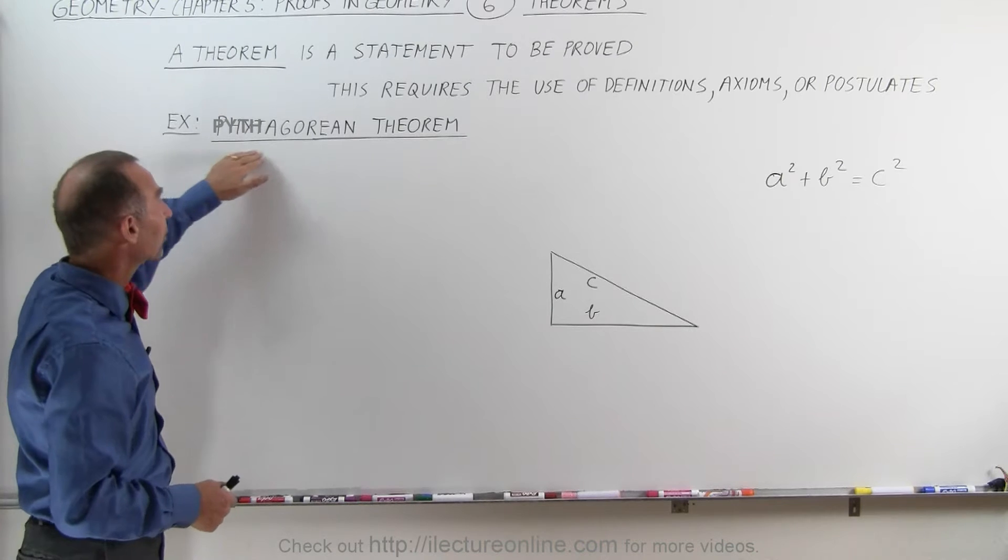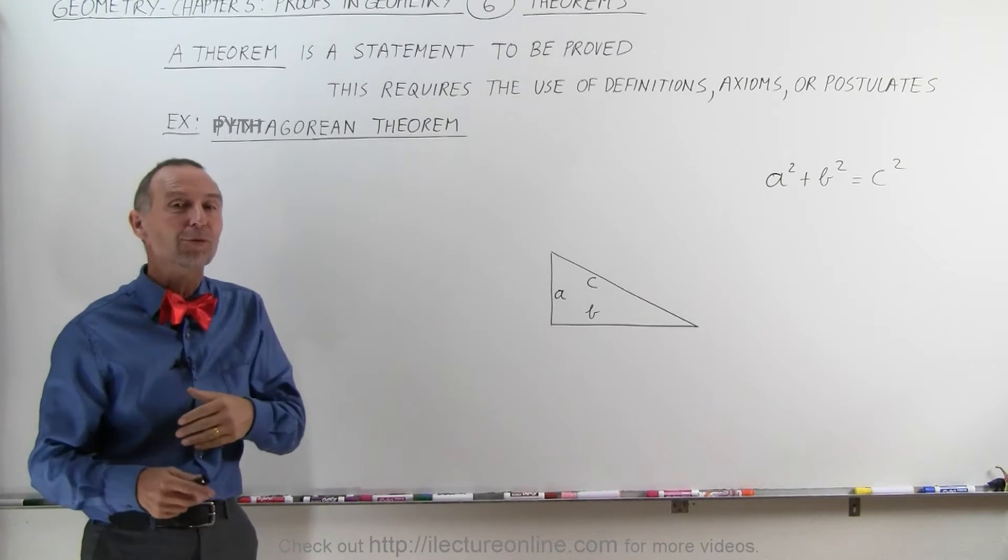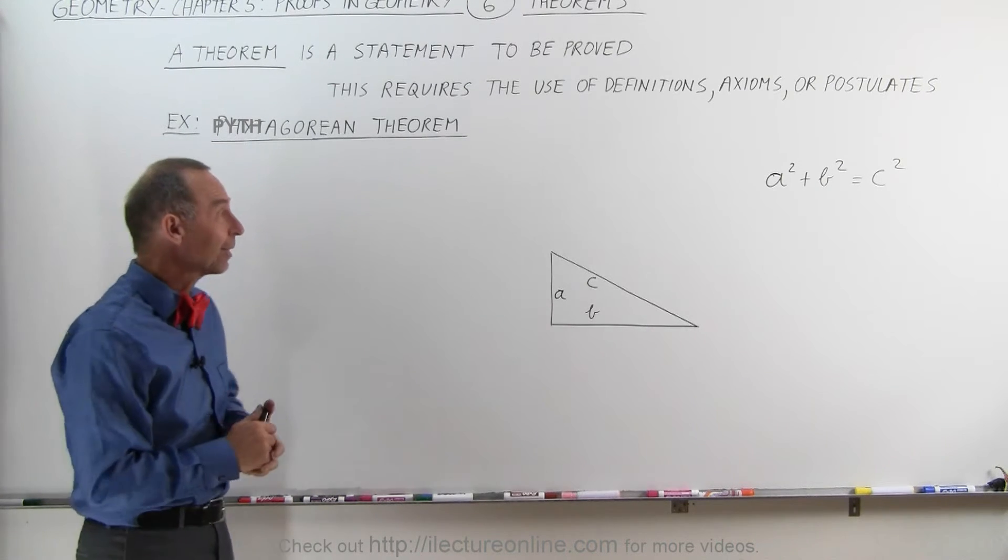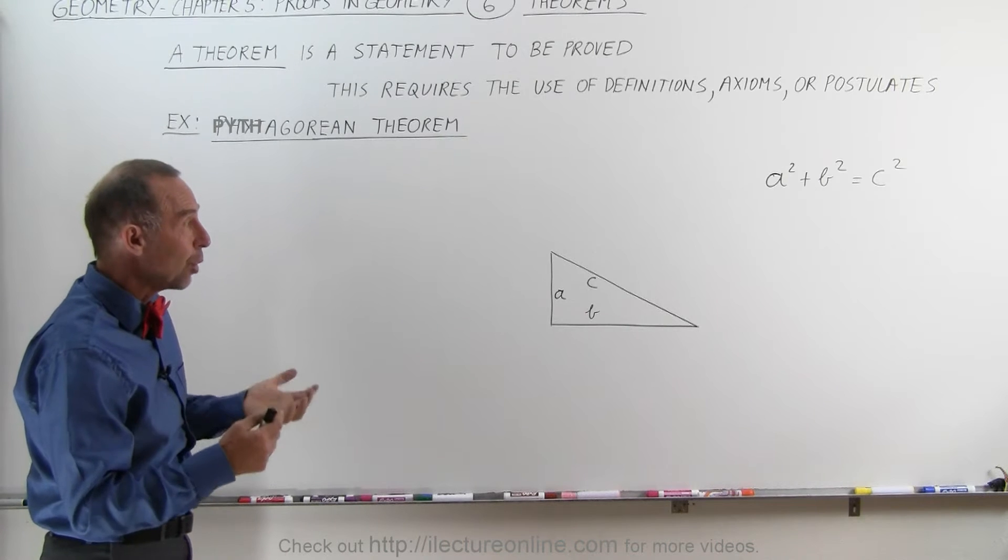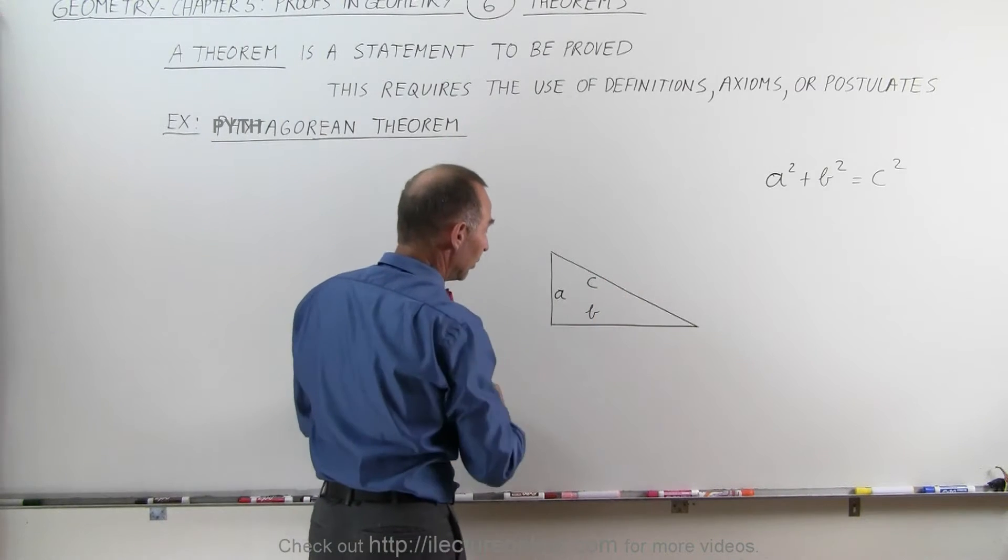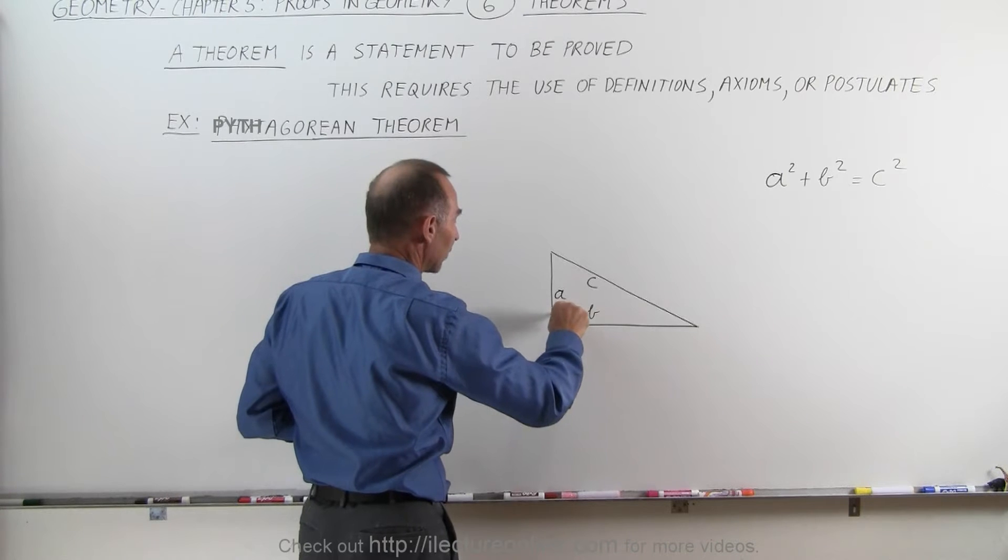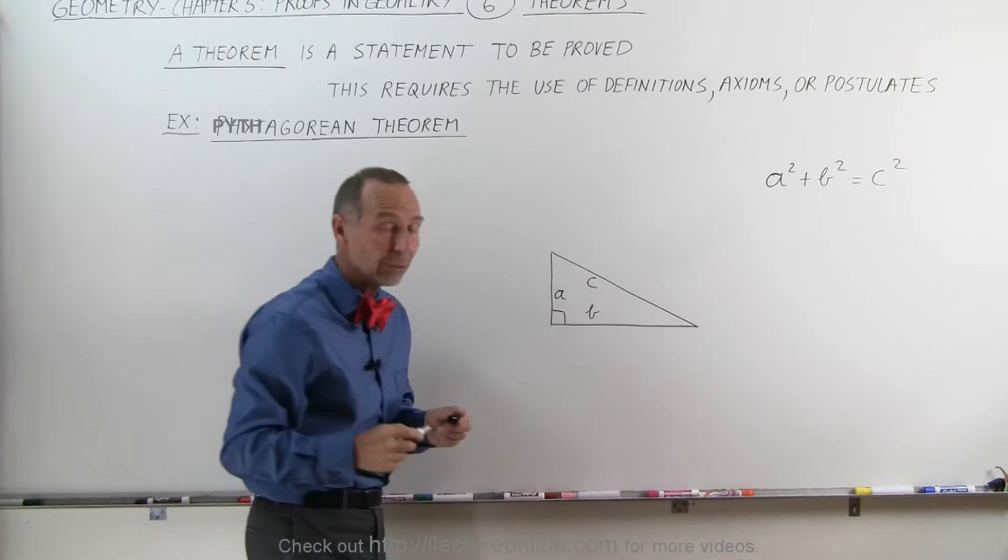For example, Pythagorean Theorem. This is probably one of the most well-known theorems in mathematics. And we know that if we have a right triangle, meaning one of the angles of the triangle is a right angle or a 90-degree angle.